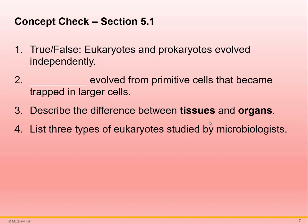It is true that eukaryotes and prokaryotes evolved independently — prokaryotes were engulfed by a primitive eukaryotic cell, which then developed into the modern eukaryotic cell. Eukaryotes evolved from primitive cells that became trapped in larger cells. Tissues are groups of cells that work together to perform a specific function, while organs are groups of different tissues that perform an overall function. Organs consist of tissues, and tissues consist of cells.